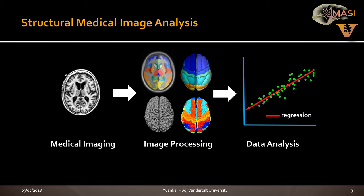To summarize: we acquire a whole bunch of medical images from scanners, then do image processing to get segmentation, surface reconstruction, etc. — basically quantitative information from a purely qualitative image. Then we can do data analysis: regression, classification, etc., based on the features we extract from image processing. My thesis is focused on the image processing and data analysis.